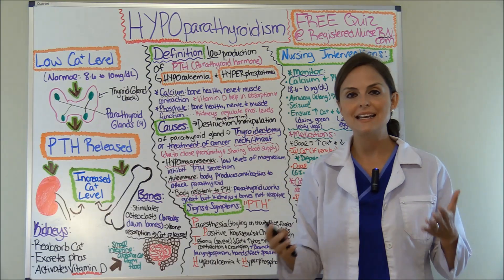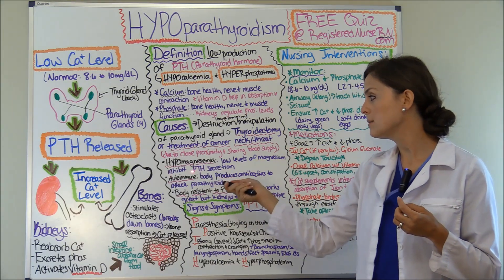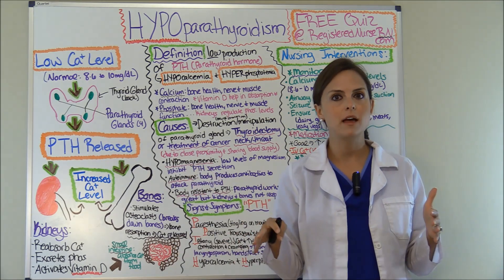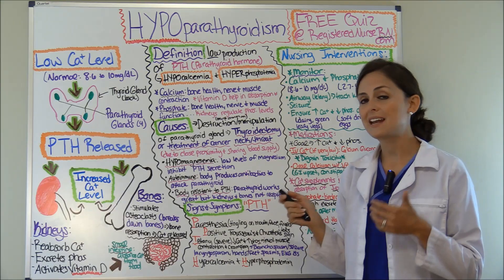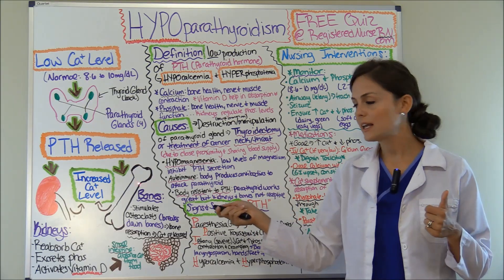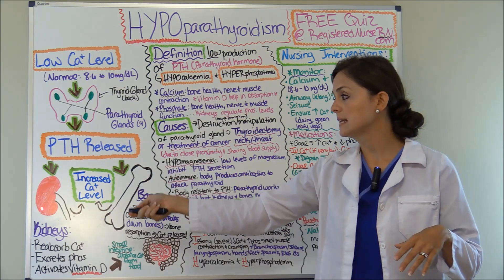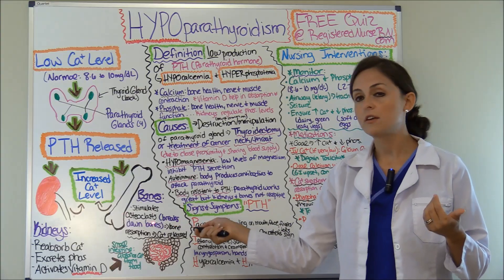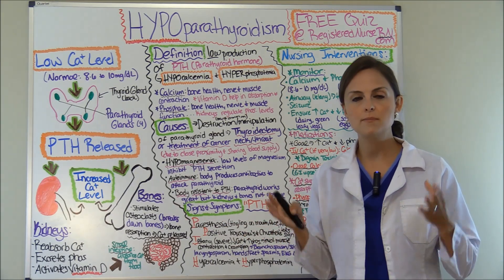Another cause is low magnesium — hypomagnesemia. When magnesium levels are low, it inhibits PTH secretion; the parathyroid tries to release PTH but can't because magnesium is too low. Another cause is autoimmune — for some reason the body produces antibodies that attack and destroy the parathyroid gland so it can no longer work. A final cause is resistance to PTH: the parathyroid releases PTH normally, but the kidneys and bones do not respond, so they don't reabsorb calcium or stimulate osteoclasts — it simply doesn't work.